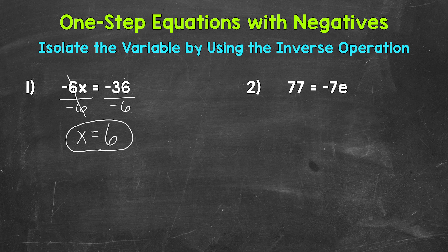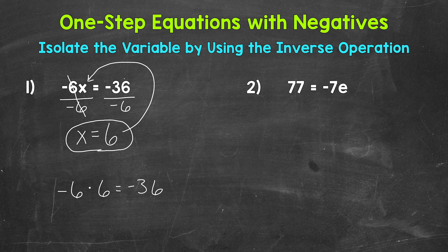We can always check a solution by plugging it into the original equation. Let's plug 6 in for x. We have negative 6 times a positive 6 equals negative 36. A negative times a positive equals a negative, so negative 6 times positive 6 does equal negative 36. We have the correct solution: x equals 6.